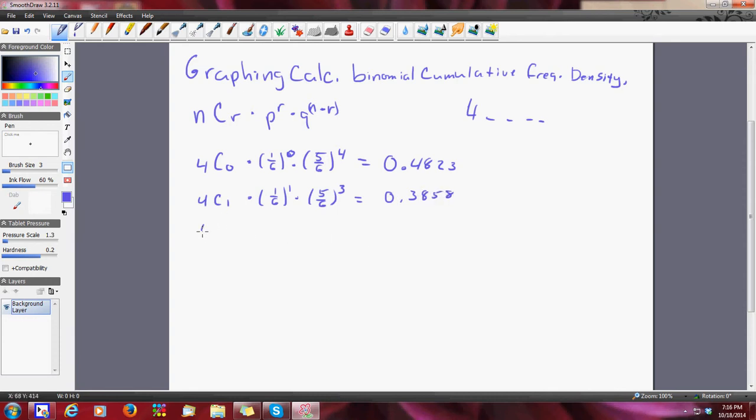If I continue on four choose two, this is the probability that it's going to roll exactly two fours, five out of six, and that's going to be 0.11574.